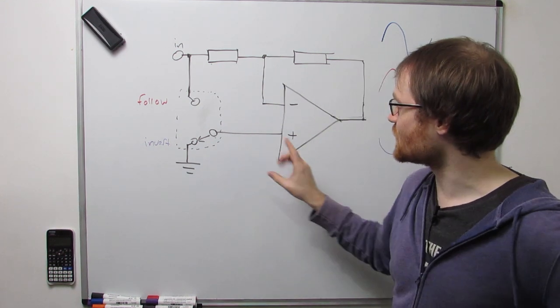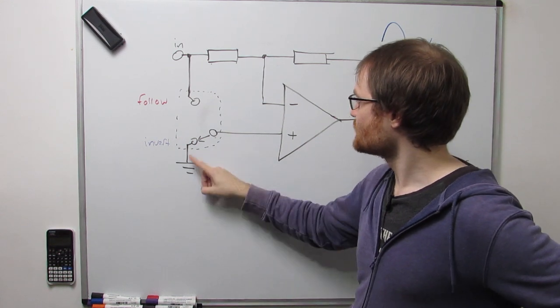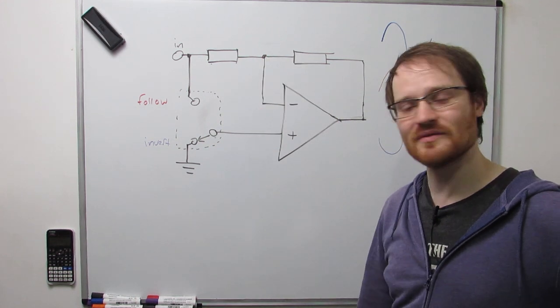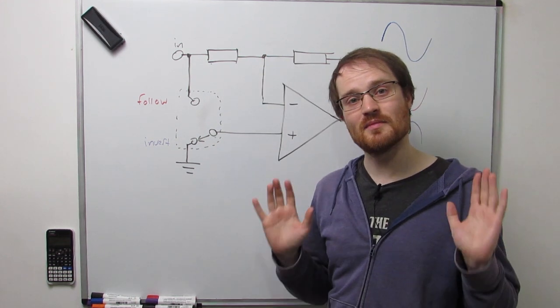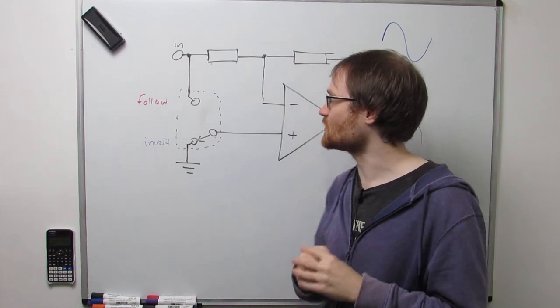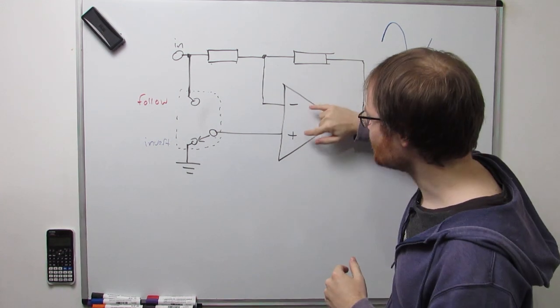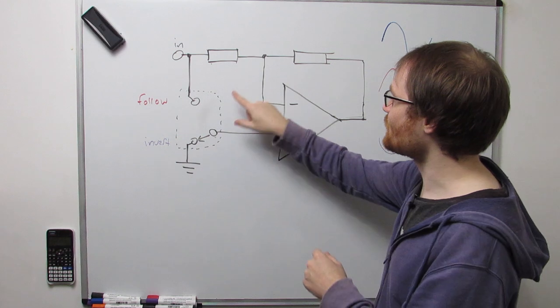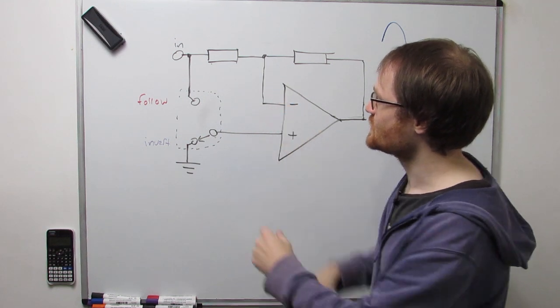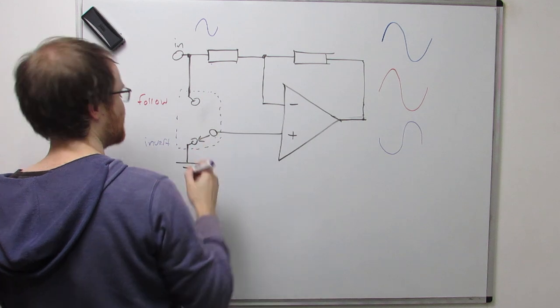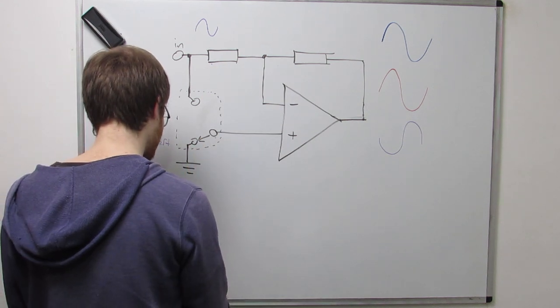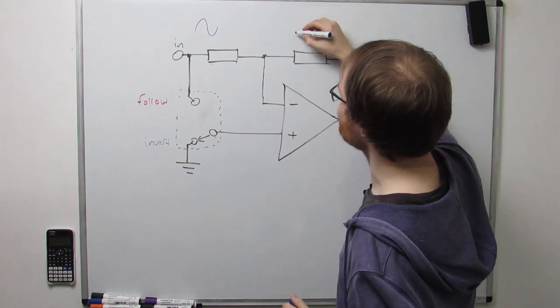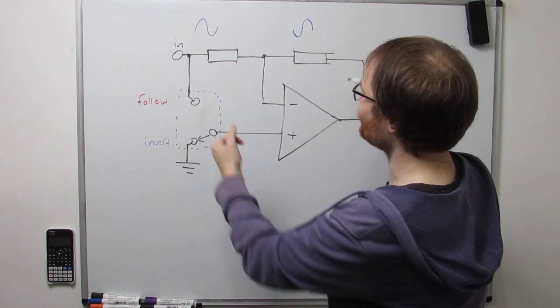And so in this configuration, we've got the non-inverting terminal grounded through this switch, and so this configuration just looks like an inverting amplifier. I've gone over inverting amplifiers in many videos, check out this op-amp playlist if you want to know more. A very brief recap, we've got negative feedback here. So these two inputs want to look the same. This input is ground, so the op-amp wants to make this input ground. If we have a sine wave coming in like this, the op-amp wants to make this point zero.